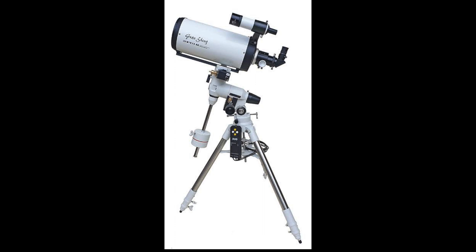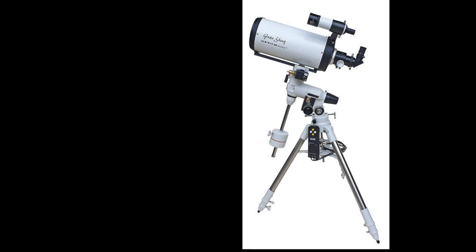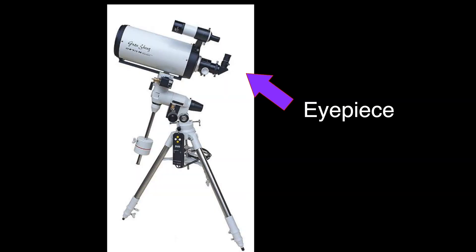In part one of the telescope video, I talked about a telescope comprising a telescope tube with the optical system, an equatorial mount to support the tube, and eyepieces for magnification. Today we will see more components of the telescope and what goes into setting up a telescope.